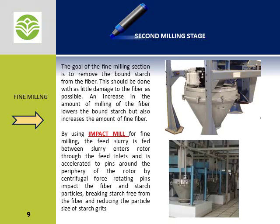Second milling. The goal of the second milling section is to remove the bound starch from the fiber. This should be done with as little damage to the fiber as possible. An increase in the amount of milling of the fiber lowers the bound starch but also increases the amount of fine fiber.